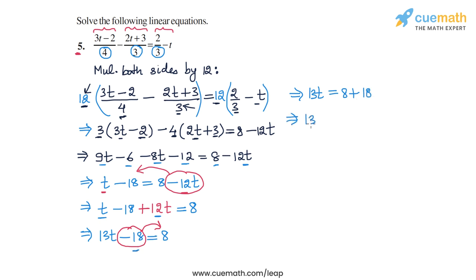So we will get 13t is equal to 8 plus 18, or 26. And finally, we just need to divide both sides by 13 to get rid of this coefficient of t. This will give us t is equal to 26 divided by 13. 26 divided by 13 is 2.